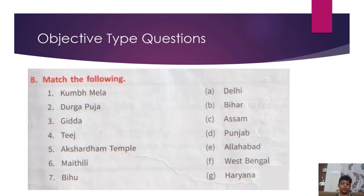B. Match the following: Kumbh Mela — Allahabad; Durga Puja — West Bengal; Giddha — Punjab; Kej — Haryana; Akshardham Temple — Delhi; Maithili — Bihar.